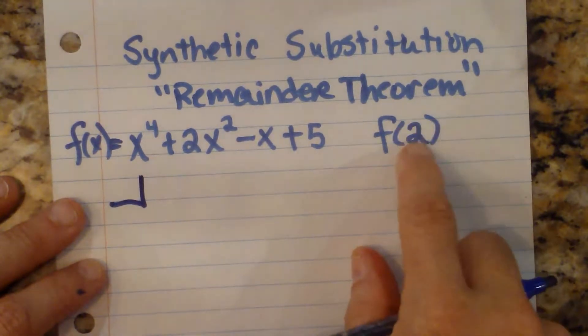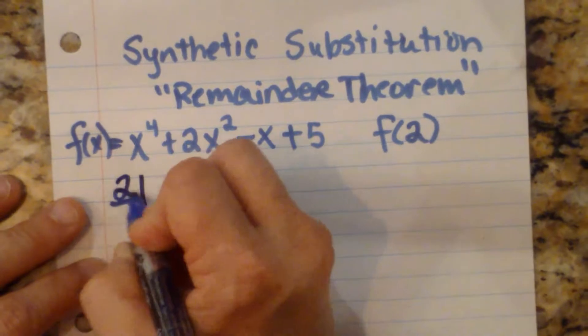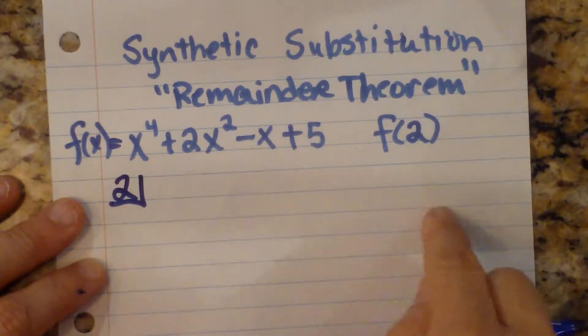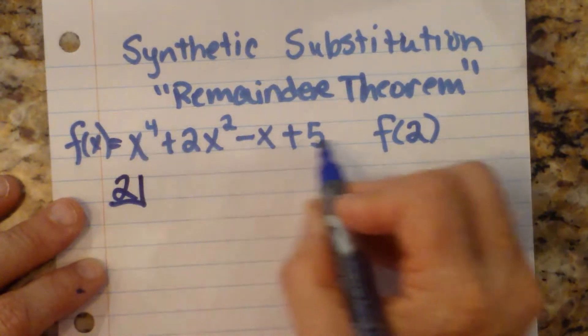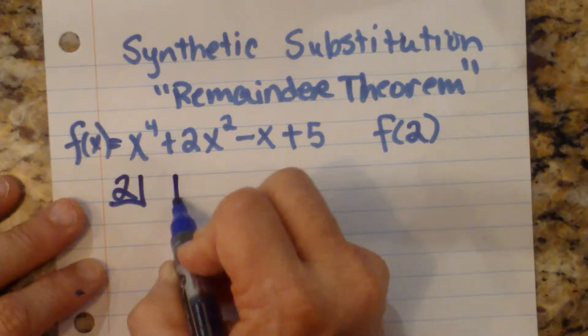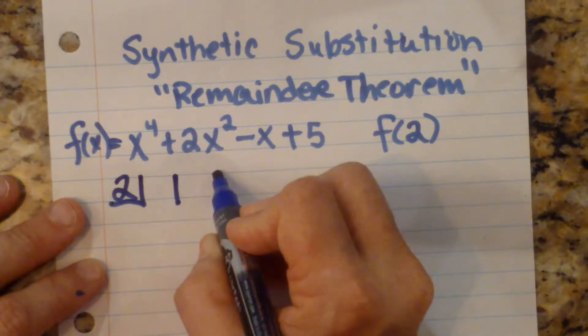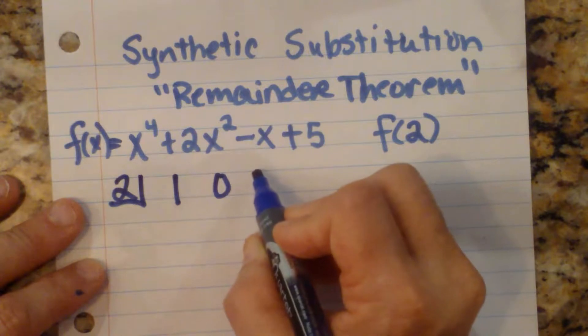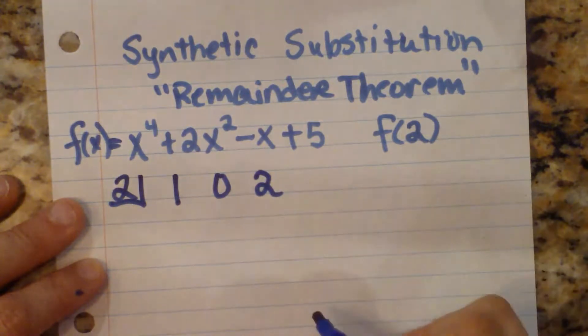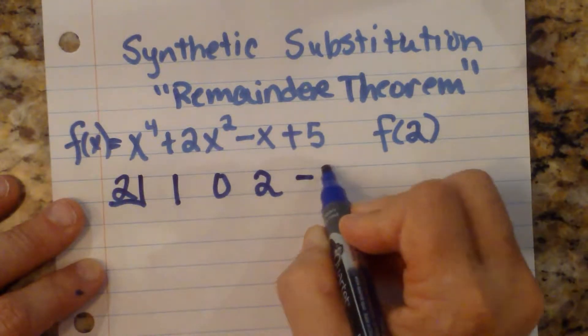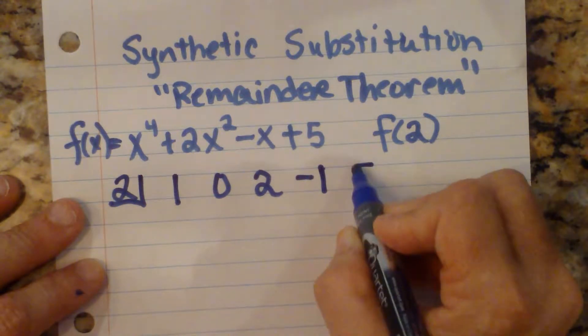So what we're going to do is take the value 2 and basically synthetically divide. Let's write our coefficients down. Our lead coefficient is 1. We don't have a cubic term, so there's a 0. The quadratic term lead coefficient is 2. The linear term has a negative 1, and the constant is 5.